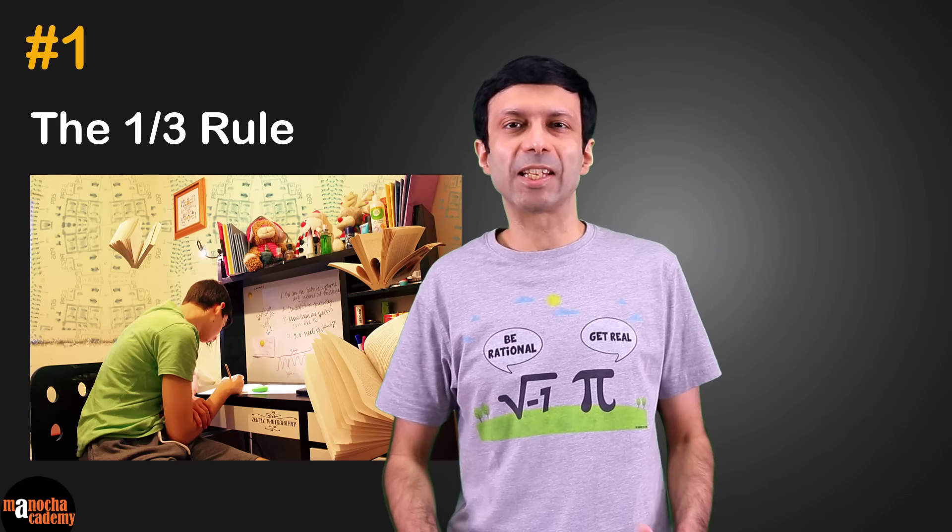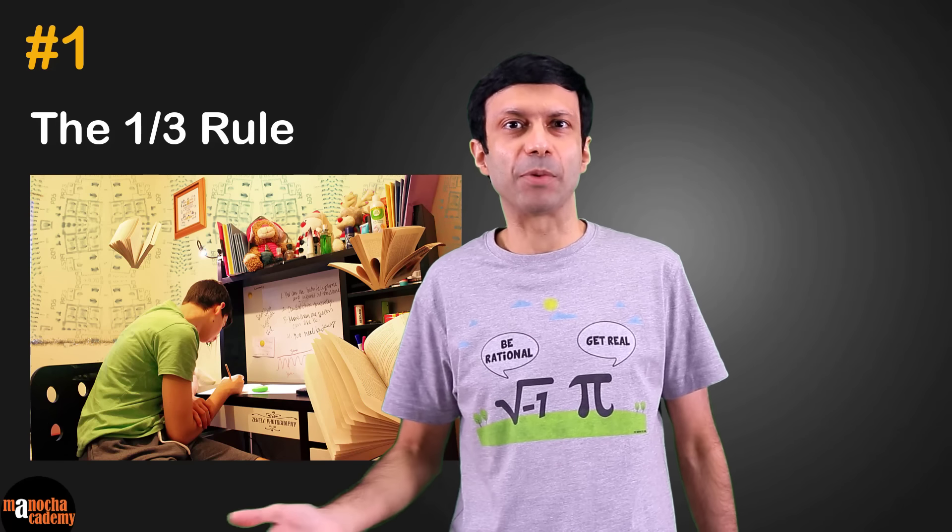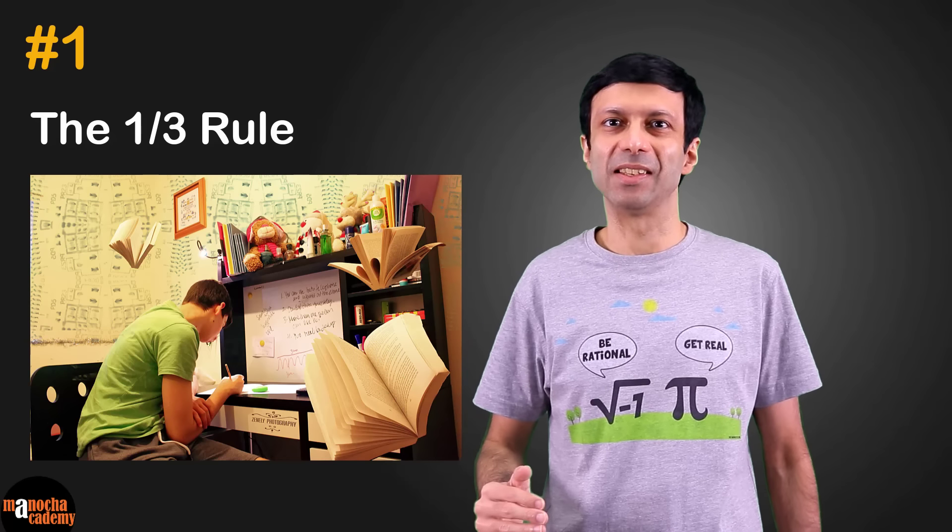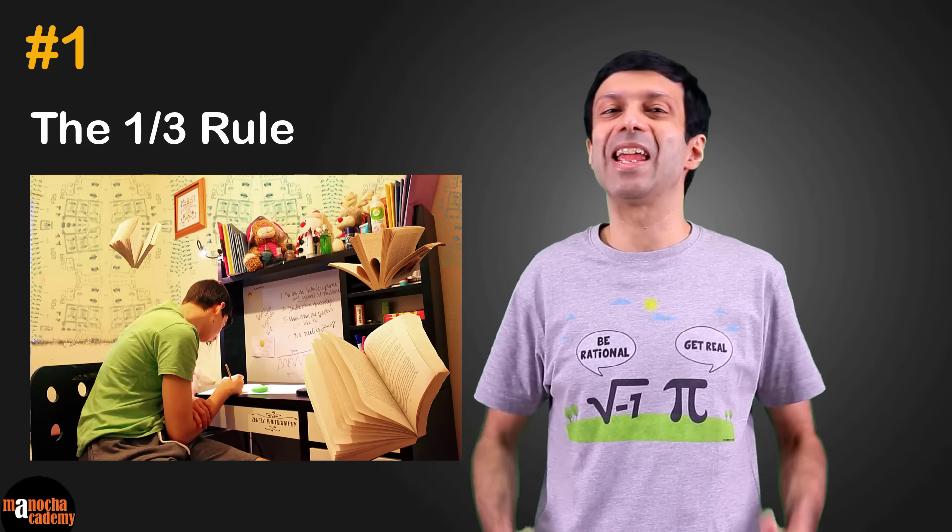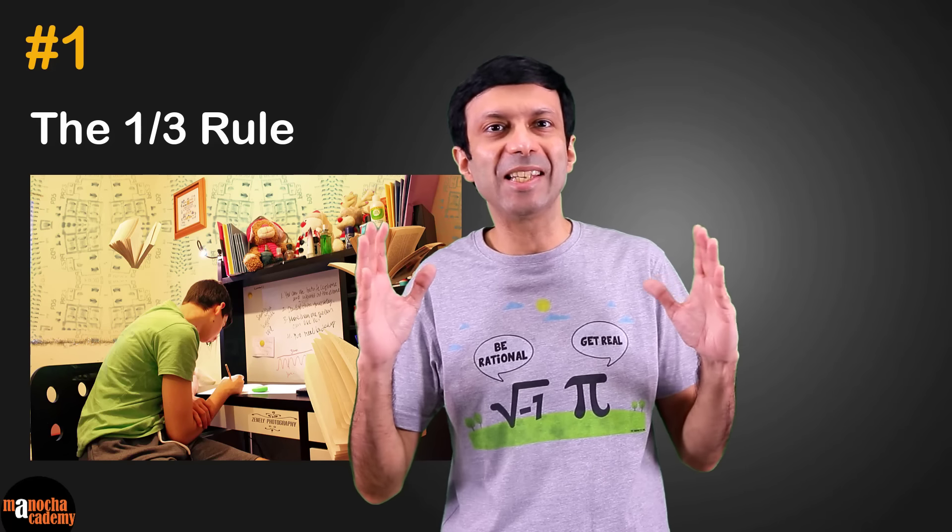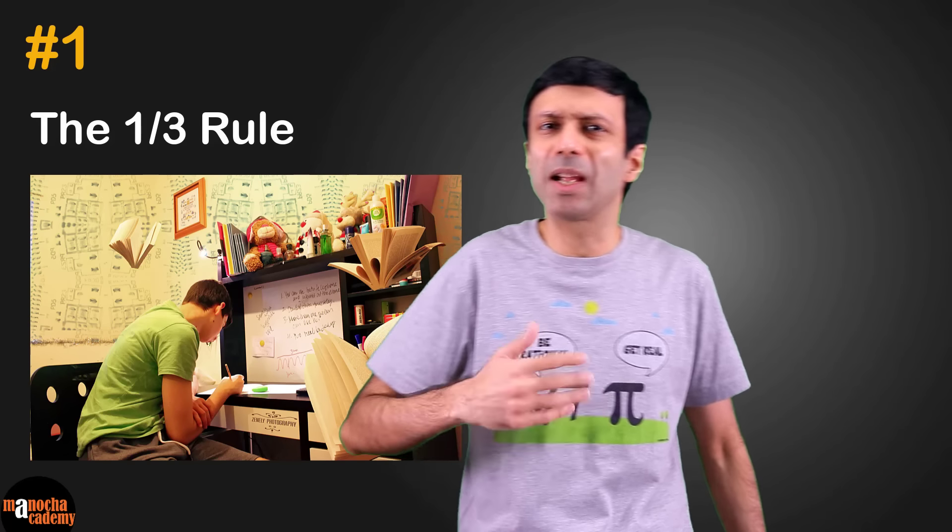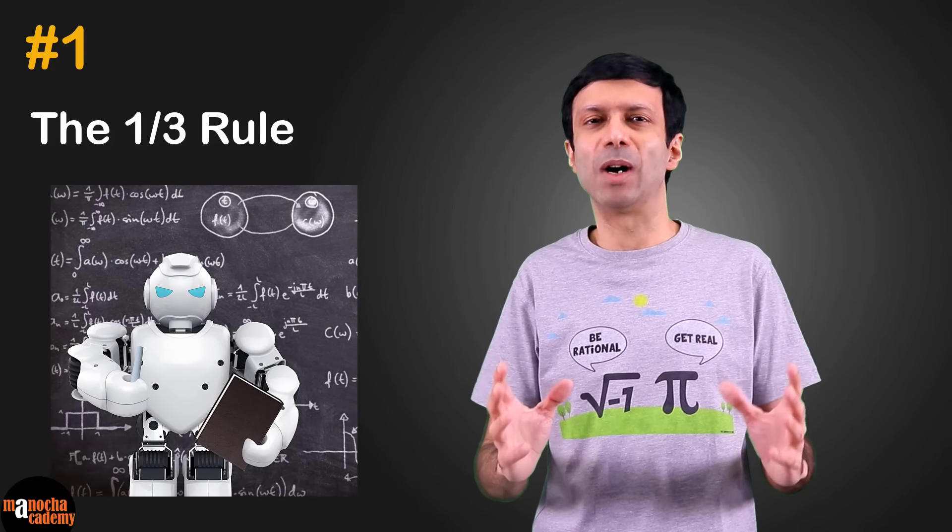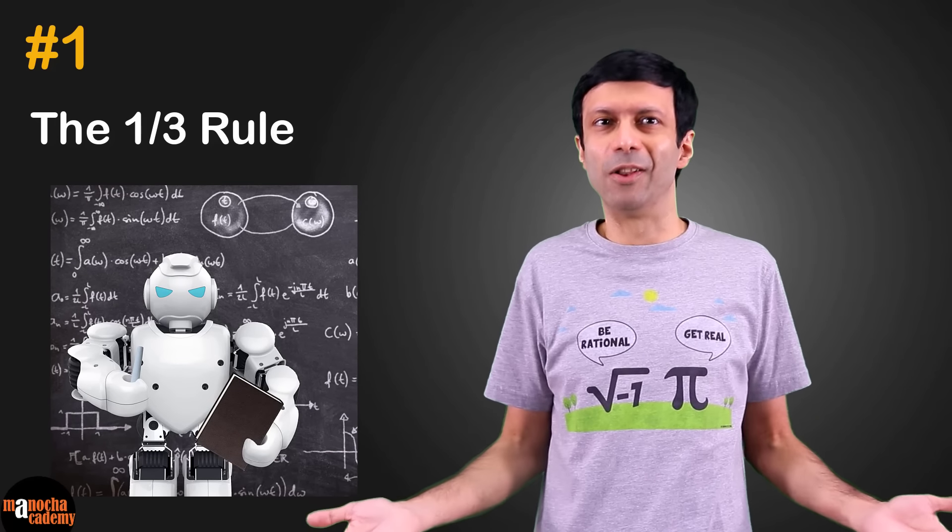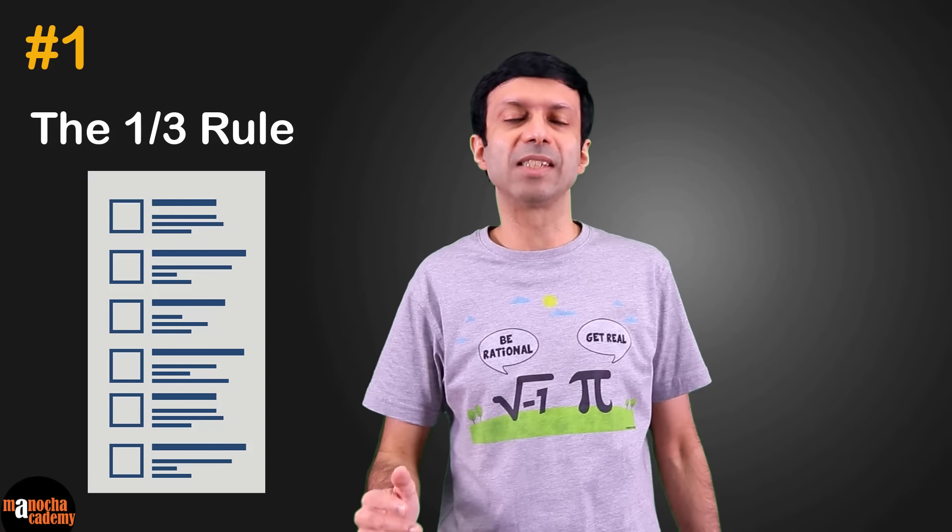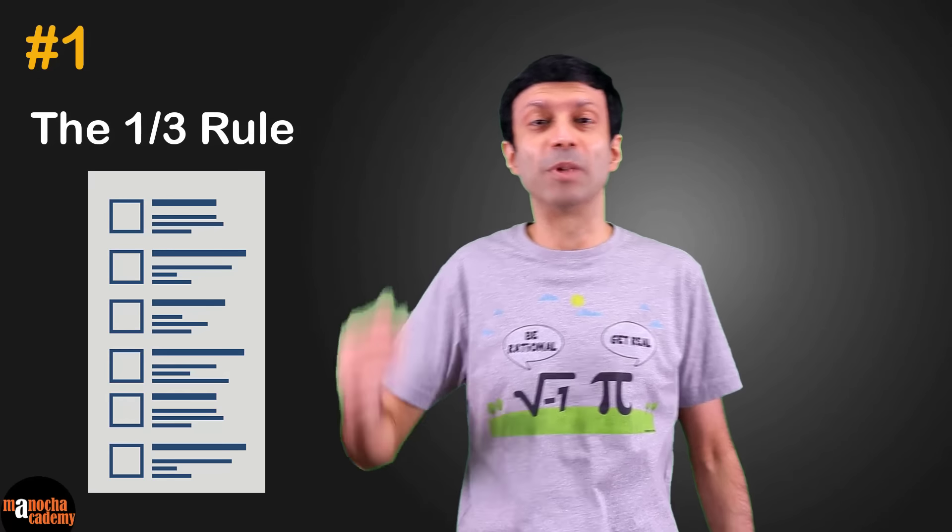Tip number one, the one-third rule. When you pick up your maths textbook to practice sums from a chapter, practice only one-third of the chapter exercise. Don't practice all the chapter questions in one shot. Why? Because when you're practicing the same type of questions it becomes mechanical, you're working like a robot, your brain is not thinking much so you're not learning a lot.